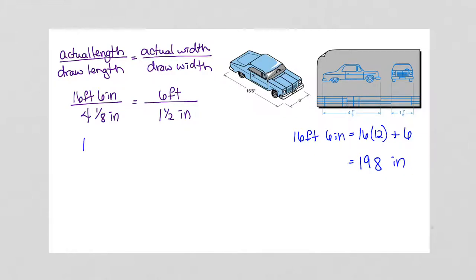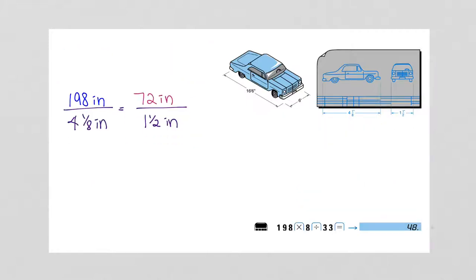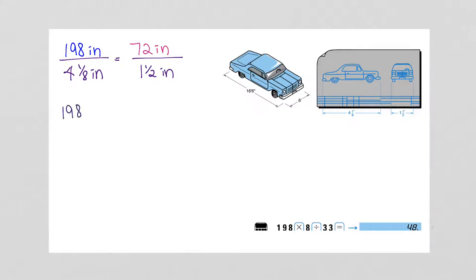On the top here, we've got 198 inches to still 4 and 1 eighth inches. Then we're going to also change 6 feet to inches: 6 times 12, 72 inches. Now I'm going to start dividing. We're going to start with 198 divided by 4 and 1 eighth.